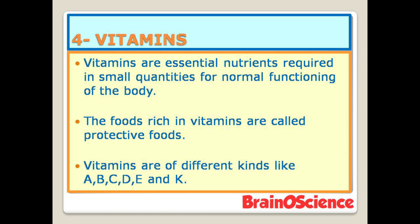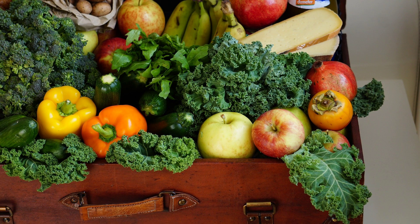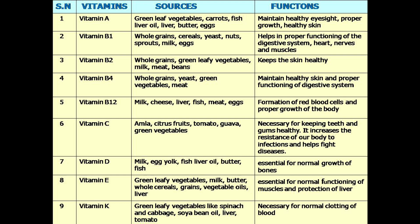The fourth nutrient is vitamins. Vitamins are essential nutrients required in small quantities for normal functioning of the body. Food rich in vitamins is called protective food. Each vitamin is found in particular foods and performs specific functions. Vitamins are of different kinds: vitamin A, vitamin B, vitamin C, vitamin D, vitamin E, and vitamin K.